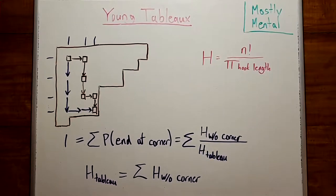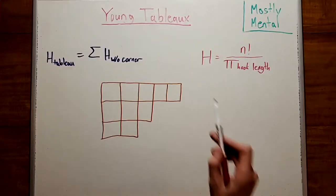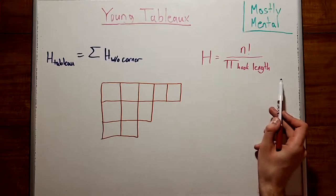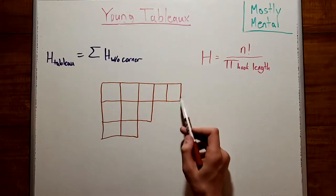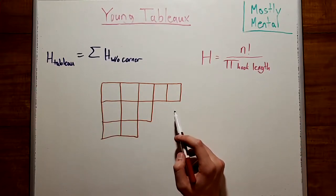And we're guaranteed that this process will end at one of the corners, so if we sum these probabilities for all possible corners, we have to get one. And then multiplying through by the hook length formula for the full tableau, we get h for the tableau, which is going to be the sum of the hook length formulas for the tableau with each possible corner removed. And this here is a recurrence relation on the h's.